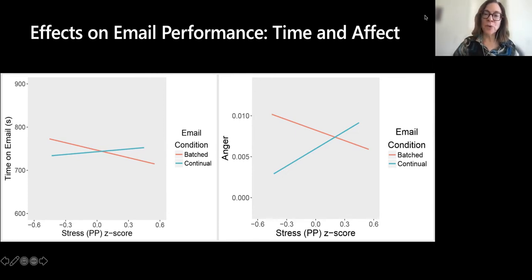We also find a relationship with mood, and this is anger as measured by the thermal imaging camera that as stress goes down, anger goes up when email is batched, which is a curious finding. Continual makes perfect sense for us, right? If you're continually interrupted, you're getting more and more angry and more and more stressed, but it's hard for us to interpret why we find this other, why would people be less angry and more stressed when email is batched? I don't know, perhaps this is an argument for batching email.